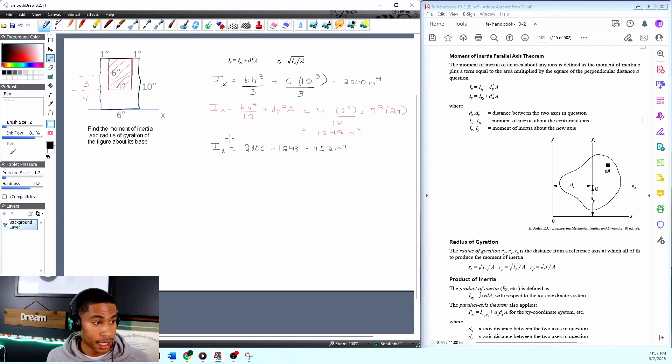Now we just need to get our radius of gyration. rx is equal to the square root of ix divided by a. So what is ix? Well, we know that to be 752.